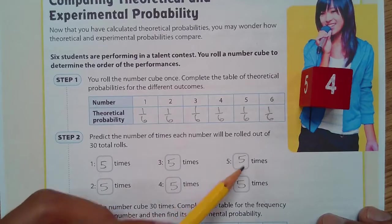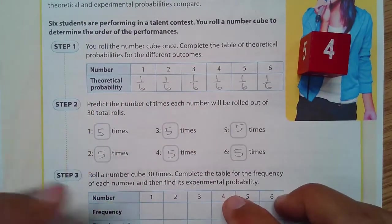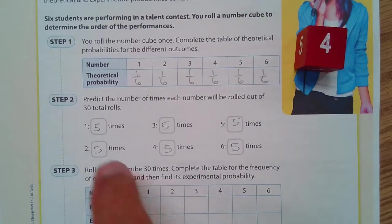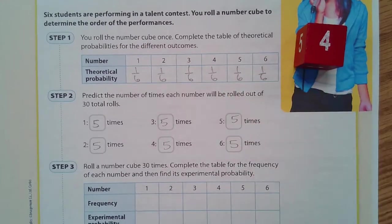So, I'm saying out of 30 total rolls, 5, 10, 15, 20, 25, 30, it should be even. It should be evenly distributed. All of them should come up 5 times. That's theoretically what should happen.